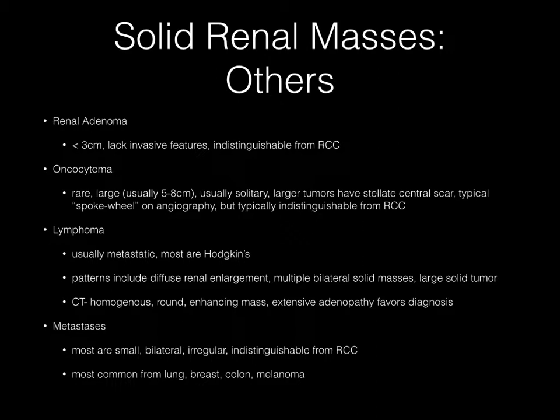Lymphoma is usually metastatic, and most are related to Hodgkin's lymphoma. Patterns include diffuse renal enlargement, multiple bilateral solid masses, or a large solid tumor. On CT, you can see a homogeneous round enhancing mass, and extensive retroperitoneal adenopathy favors the diagnosis. Metastases are also seen — most are small, bilateral, irregular, and indistinguishable from RCC — and most commonly occur from lung, breast, colon, and melanoma.